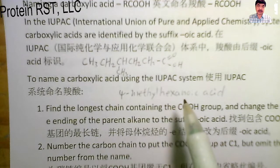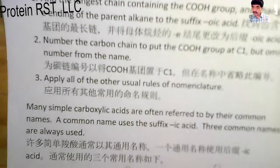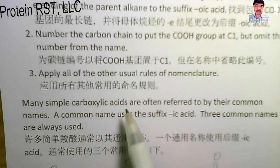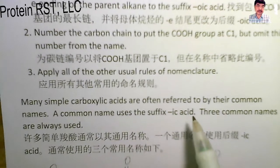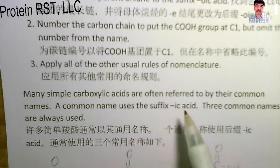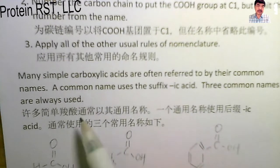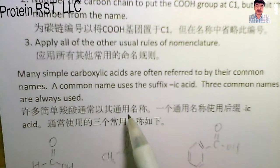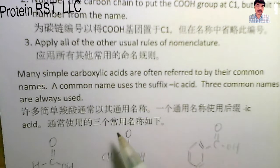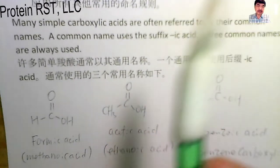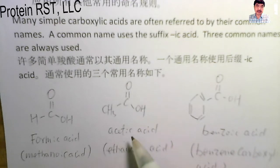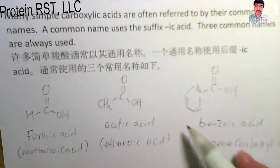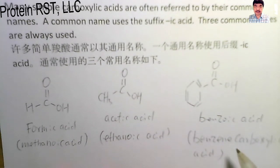4-methylhexanoic acid. Many simple carboxylic acids are often referred to by their common names. Common names use the suffix '-ic acid.' Three common names are always used: formic acid, whose IUPAC name is methanoic acid; acetic acid, whose IUPAC name is ethanoic acid; and benzoic acid, whose IUPAC name is benzenecarboxylic acid.